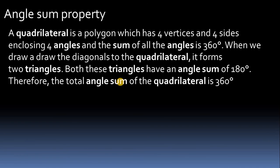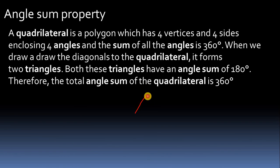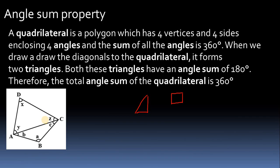Angle sum property: the sum of all three angles of a triangle is 180 degrees. For any quadrilateral like a square or rectangle, the sum of all four angles is 360 degrees. This is because a quadrilateral consists of two triangles, and one triangle measures 180 degrees, so 180 plus 180 equals 360 degrees.